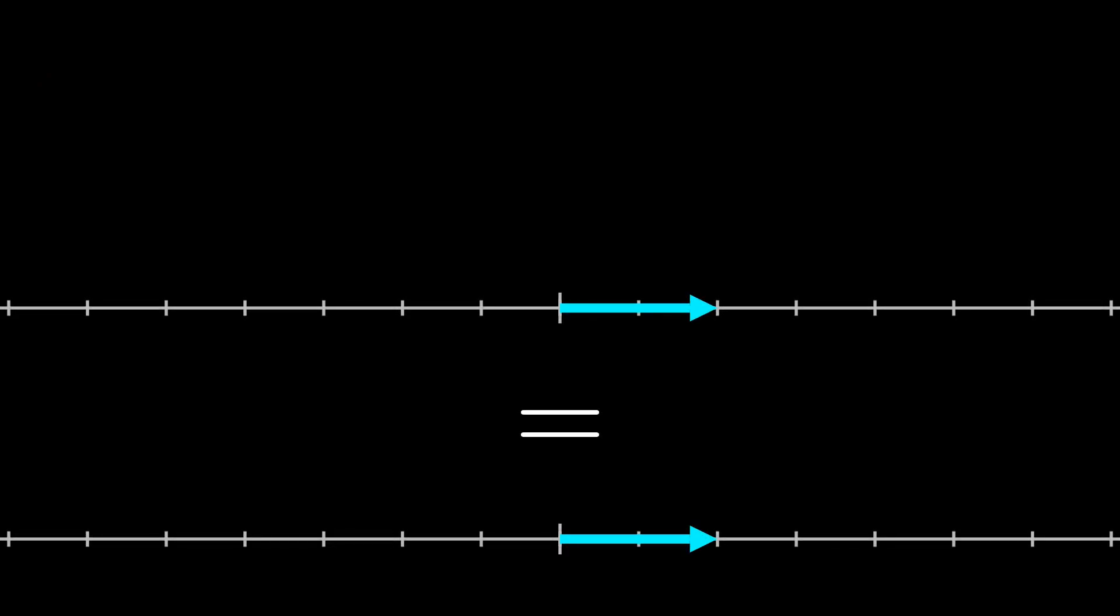But this only makes sense when multiplying by positive numbers. So what happens when we multiply a vector by a negative number? Here we can once again take inspiration from the number line, where we see that multiplying by a negative has the effect of changing its direction to be the opposite direction of what it was before.